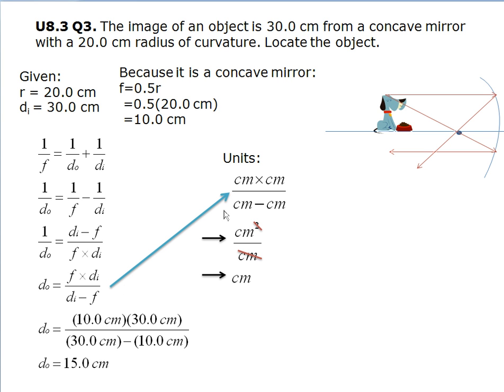Now that we've solved the problem, we need to do a units check. So we plug in the units with this equation right here. And it turns out to be centimeters. So the object is 15.0 centimeters from the concave mirror.